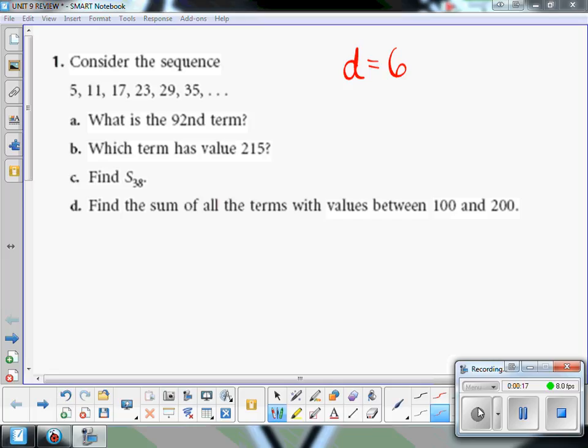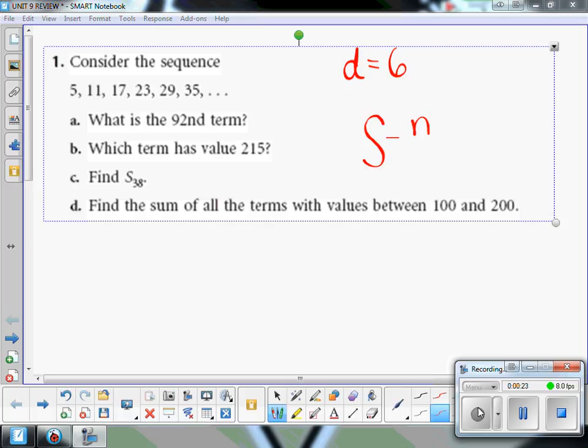So right away, once you've identified a sequence as arithmetic, jot down the formula to find the sum. You'll have it, but you want to write it next to the problem you're working on. The other thing that you might need is the explicit formula for an arithmetic, and that's Un equals U0 plus dn. And there's a difference as to when you would use each formula.